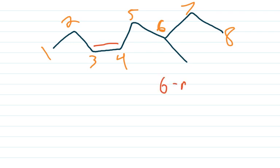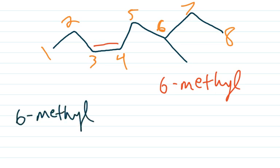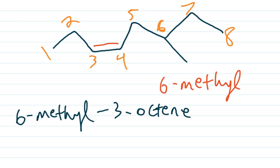The only substituent is a 6-methyl. With one substituent we start with 6-methyl, then the chain prefix is oct because it's eight carbons, and since it's an alkene we add -ene. The double bond is on carbon three, so the base name is 6-methyl-3-octene.